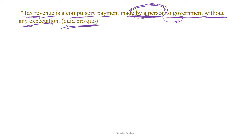Quid pro quo means there won't be any commercial or semi-commercial relationship between the government and the taxpayer. As a taxpayer, you have all the rights to demand necessary facilities for the whole society — parks, schools, hospitals. These facilities are available to all. That is, individual benefits and demands from the government. Compulsory payment to the government without any expectation of direct benefit — indirect benefit, definitely we will get it.